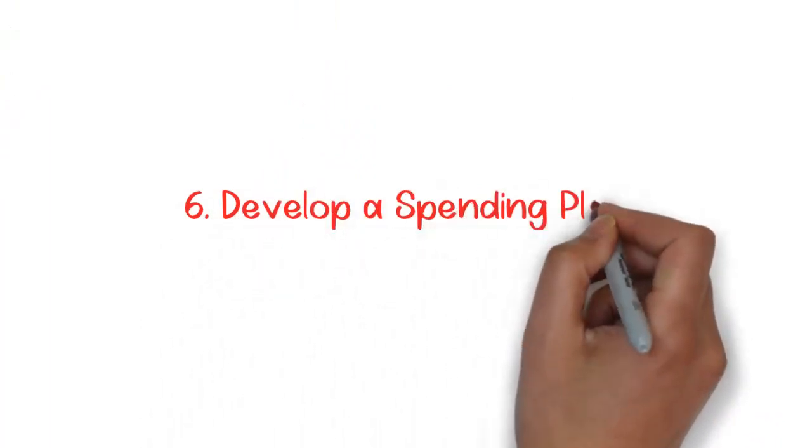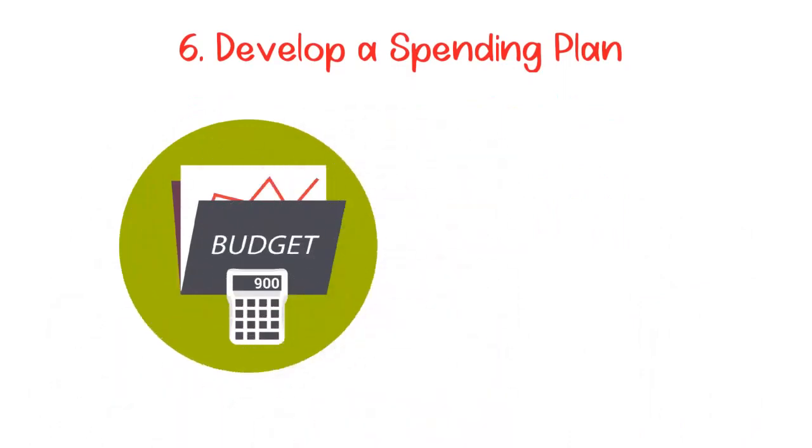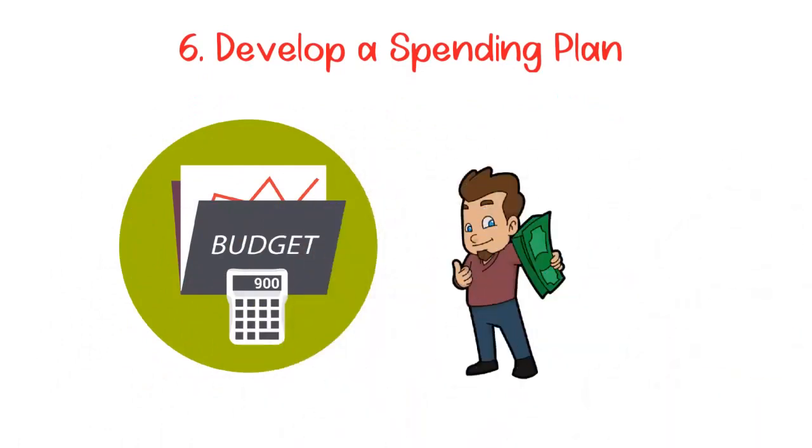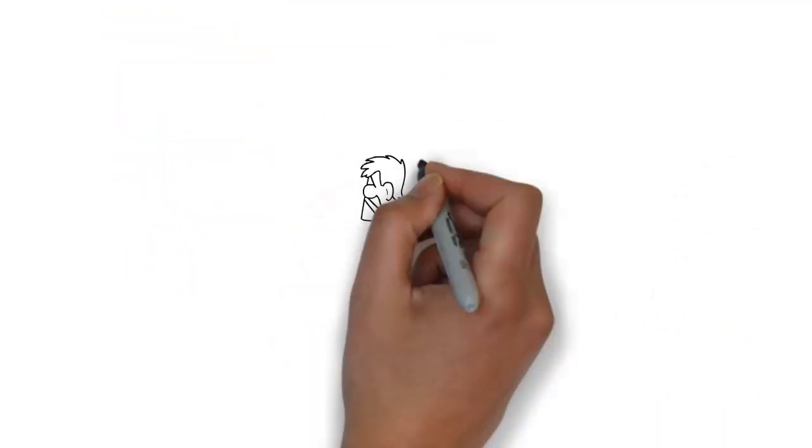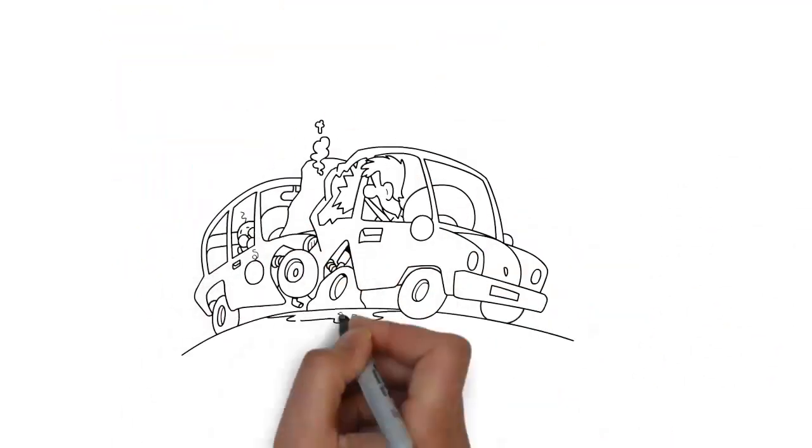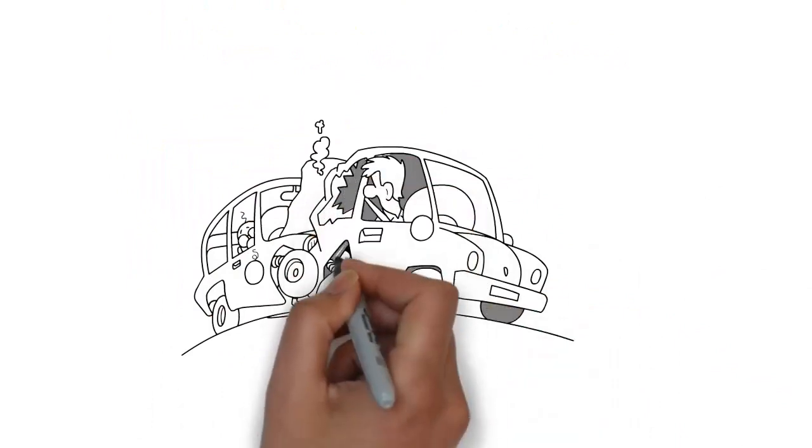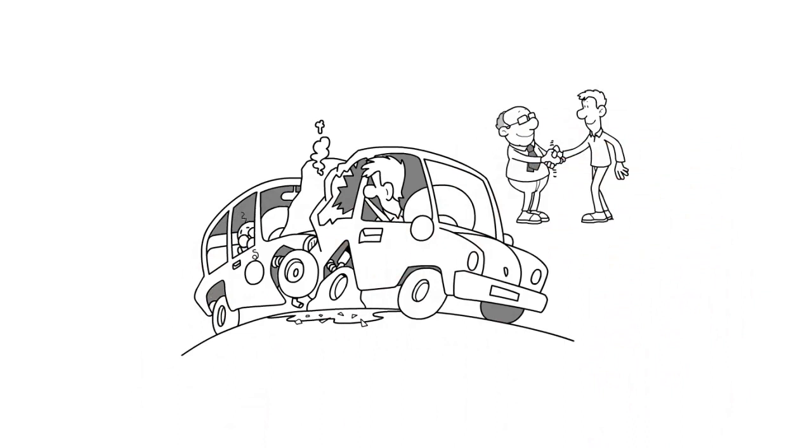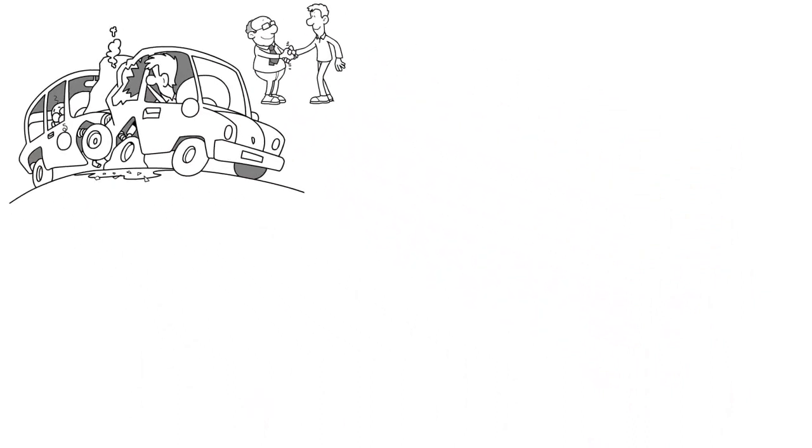Six, develop a spending plan. In addition to having a budget and sticking to it, it's crucial to create a spending plan when you receive your paycheck. While having a budget sets the framework, a spending plan helps you navigate the inevitable challenges that may arise. Sometimes, strict adherence to a budget can be difficult, and unexpected situations may require adjustments or slightly increased spending in certain areas. Life happens, and flexibility is necessary.